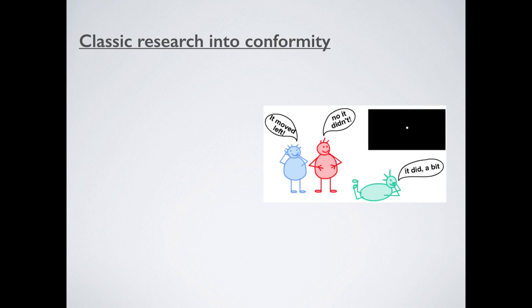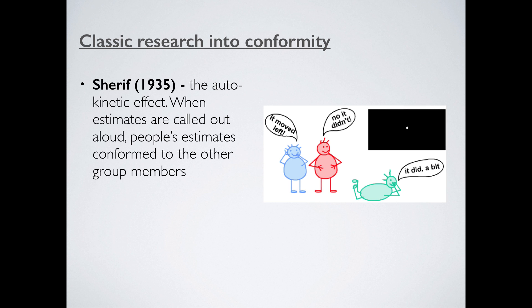What research do we have into conformity? Let's think about something called the autokinetic effect. Sherif, way back in the 1930s, noticed that when you see a tiny dot of light in a black room, it's not moving but you think that it's moving. He gets people together and asks them first of all individually how far they think the dot moved — they all give different opinions. However, when they're asked to do it in a group and call out their estimates aloud, people's estimates conform and start to come together. Gradually, everybody ends up with the same opinion.